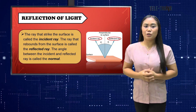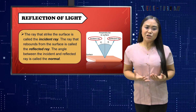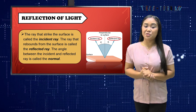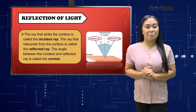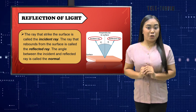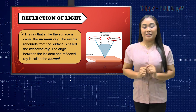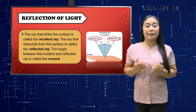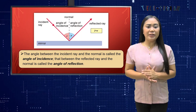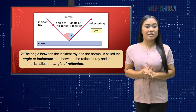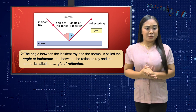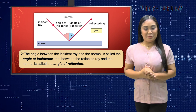Let's talk about reflection of light. Reflection is the bouncing back of light into the same medium it has been traveling after striking a surface. The ray that strikes the surface is called the incident ray. The ray that rebounds from the surface is called the reflected ray. The angle between the incident ray and the normal is called the angle of incidence, and that between the reflected ray and the normal is called the angle of reflection.